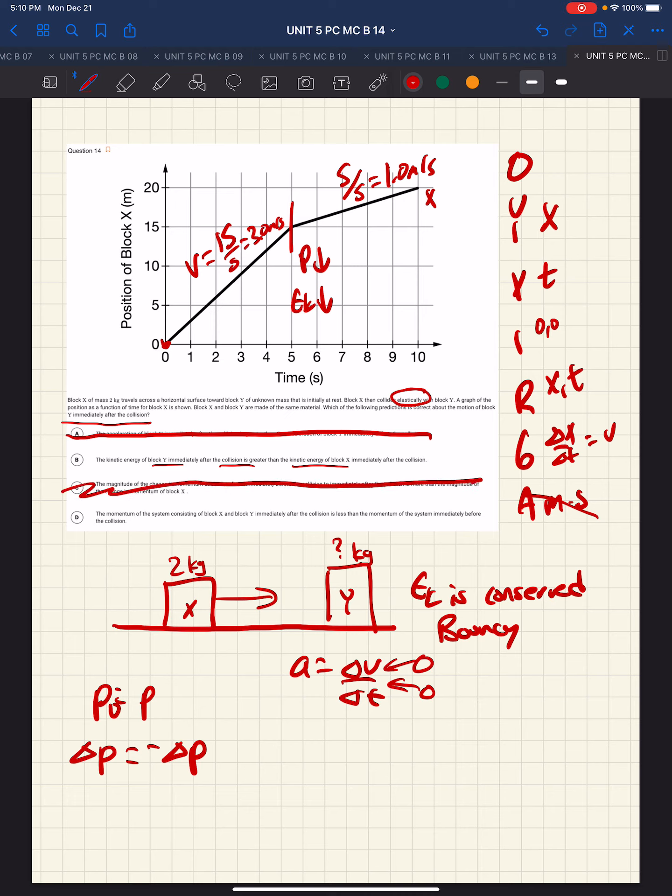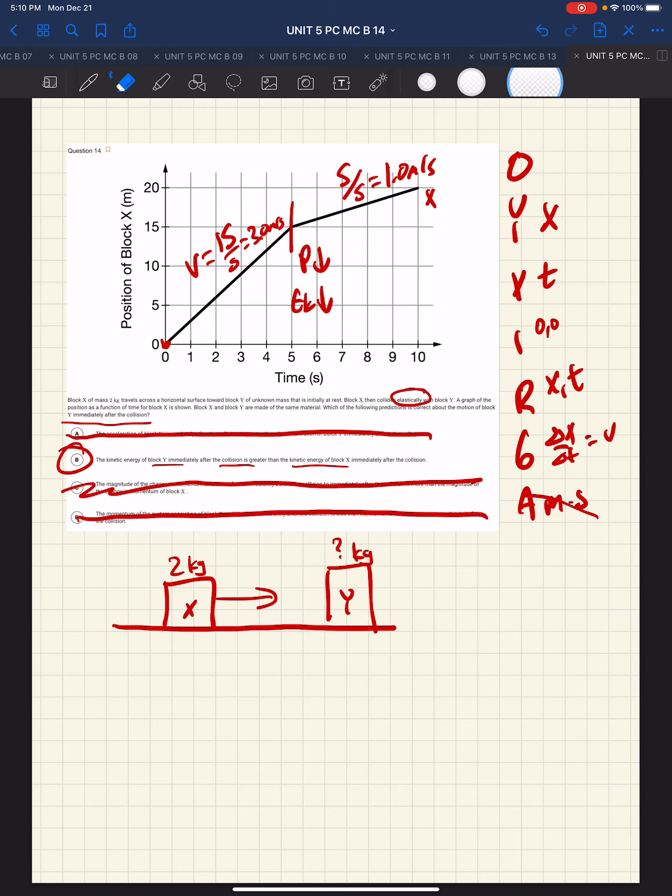Momentum of the system consisting of block X and Y immediately after the collision is less than the momentum immediately before the collision. That's false. Linear momentum is always conserved. So, where we are is we seem to have eliminated all choices except for choice B, so that should be our answer. So, it would be nice for us to also positively show that that is the answer.